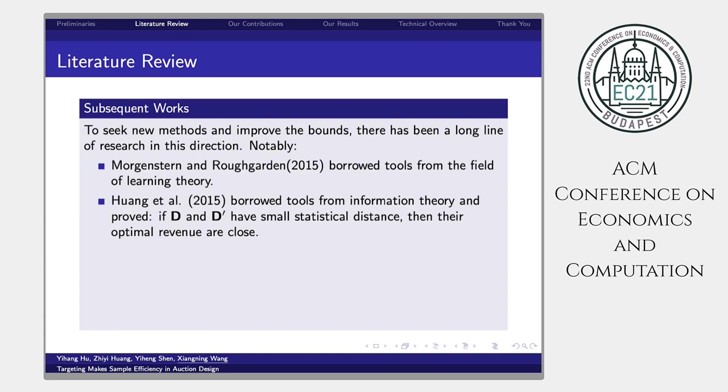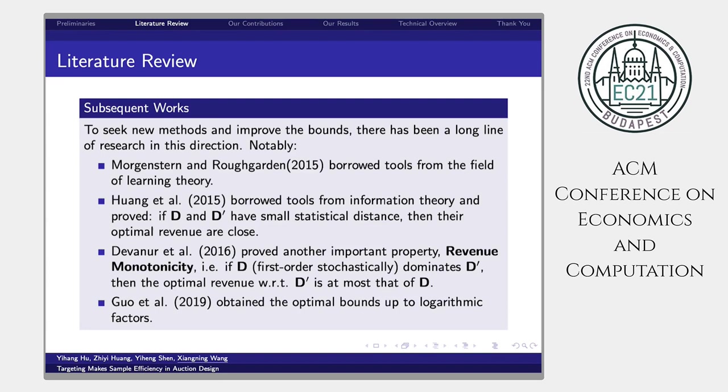Notably, Morgenstern and Roughgarden in 2015 borrowed tools from the field of learning theory to avoid the estimation of virtual values. Huang et al. in 2015 brought tools from information theory and proved that if D and D' have small statistical distances, then their optimal revenues are close to each other. Devanur et al. in 2016 proved another important property called revenue monotonicity. If D first order stochastically dominates D', then the optimal revenue with respect to D' is at most that of D. Huang et al. in 2019 obtained the optimal bounds up to log factors.